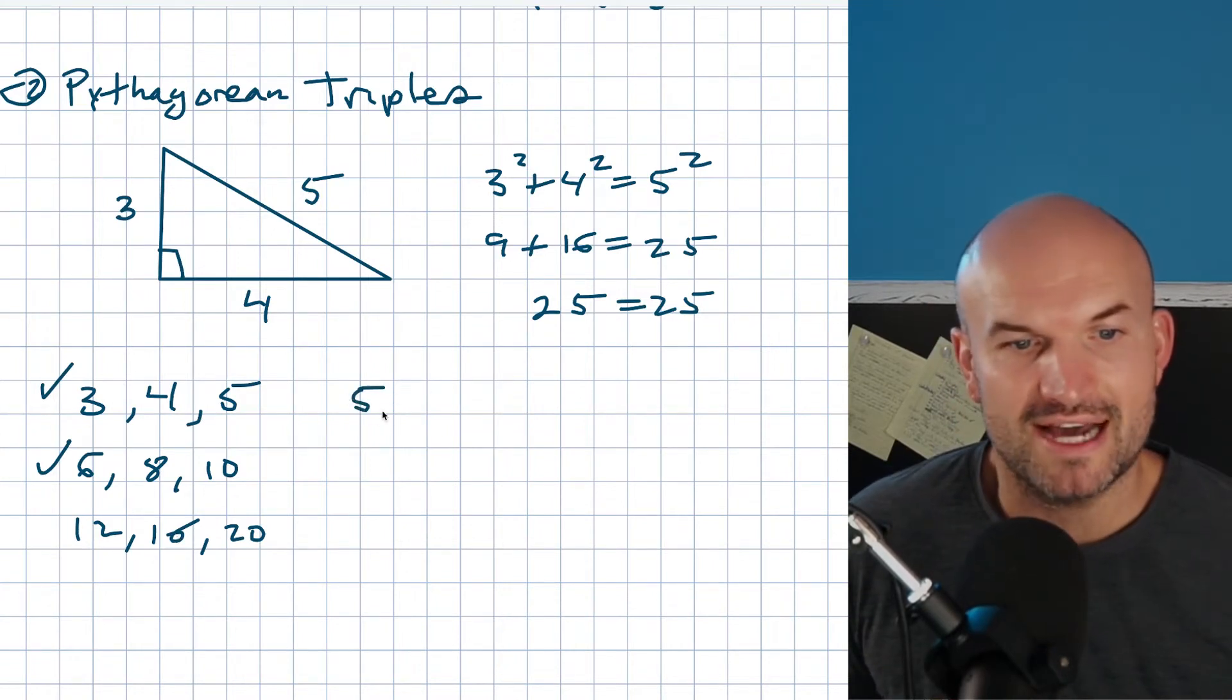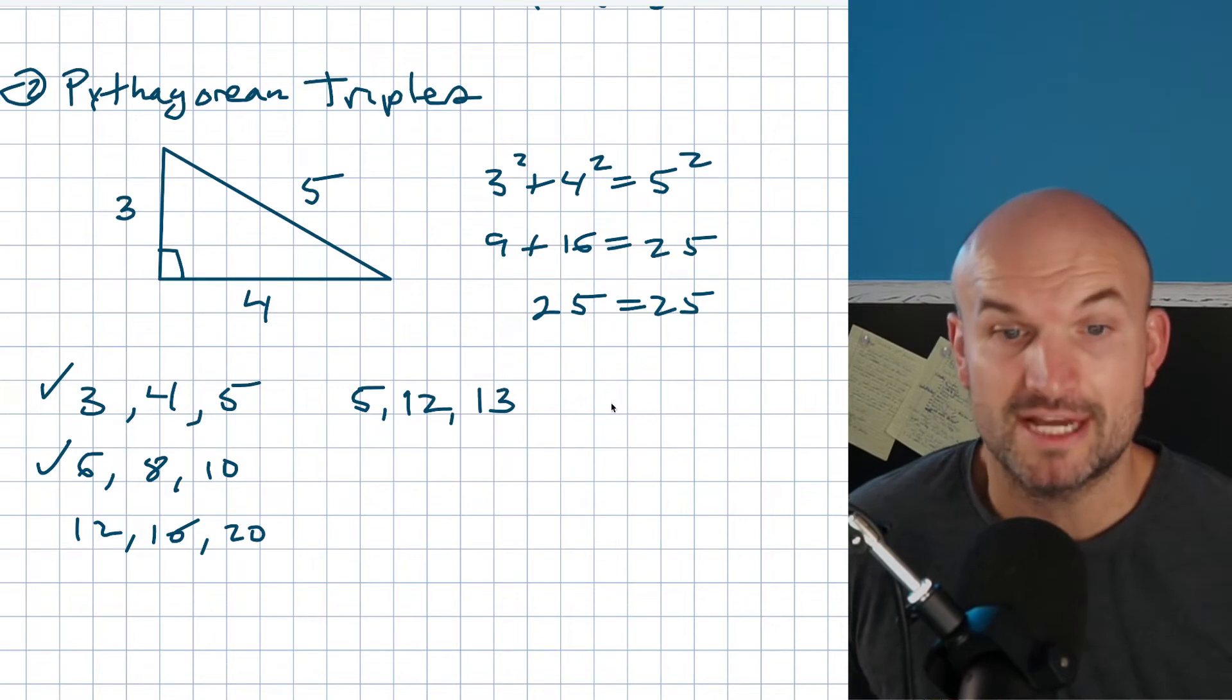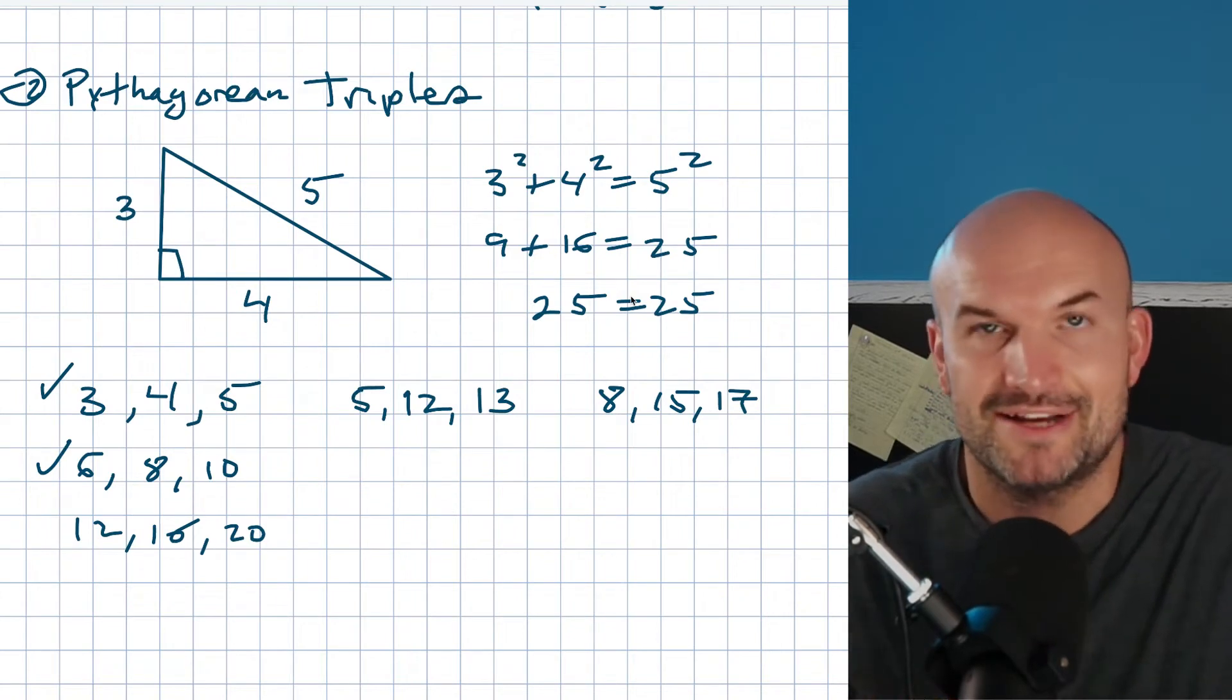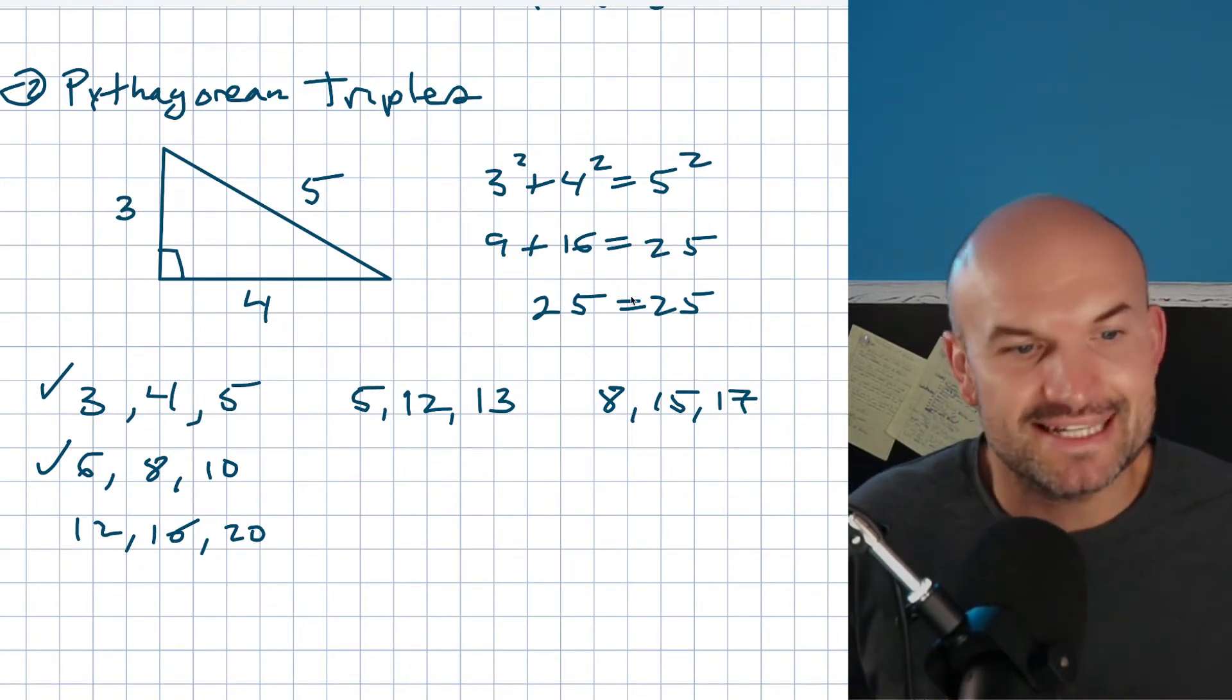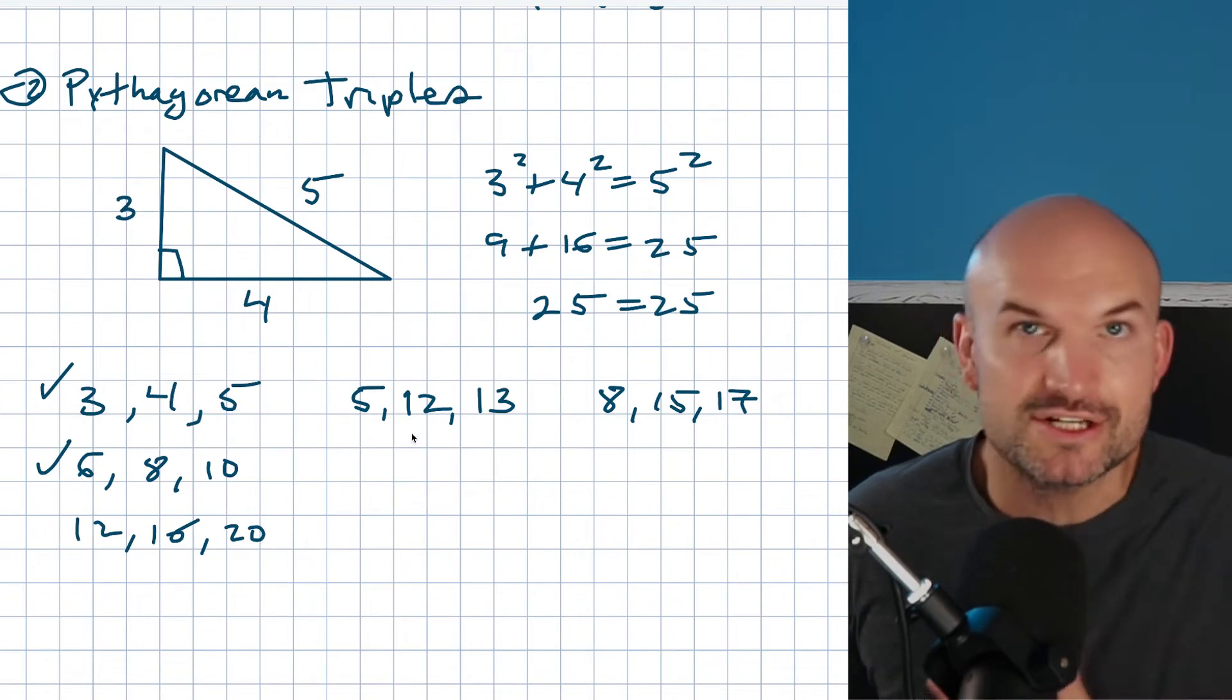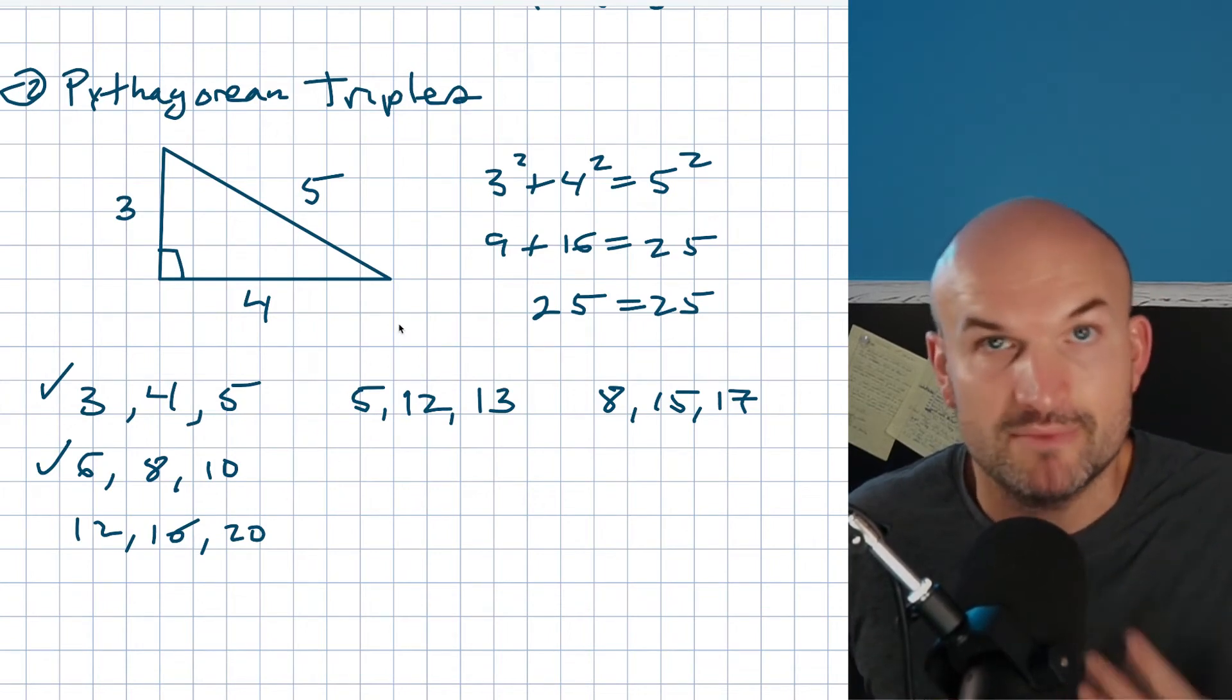And then also, we can go through the 5-12-13 Pythagorean triple, as well as the 8-15-17 Pythagorean triple. There's many other Pythagorean triples, but the main idea is these are the ones that are probably going to come up the most in my teaching and instruction.